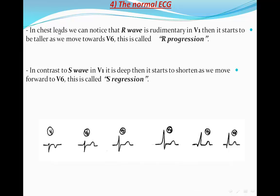The normal ECG. In chest leads, the R wave starts in V1 as a very small rudimentary wave, and the S wave is deep negative, so the ratio between R and S in V1 is very low. As we go through the chest leads toward V6, this ratio increases until the S wave is absent in V6 and the R wave is very high.